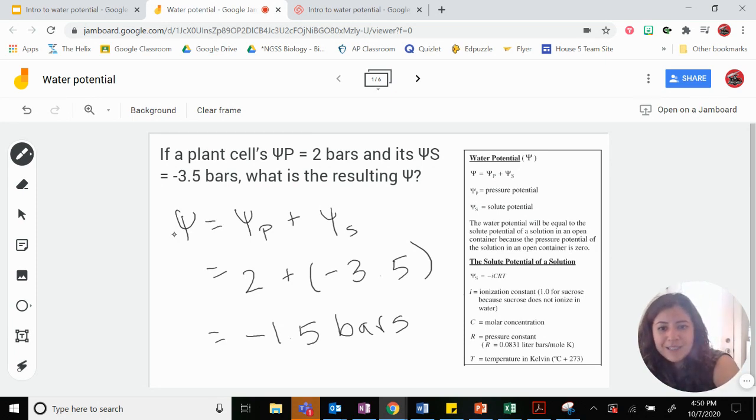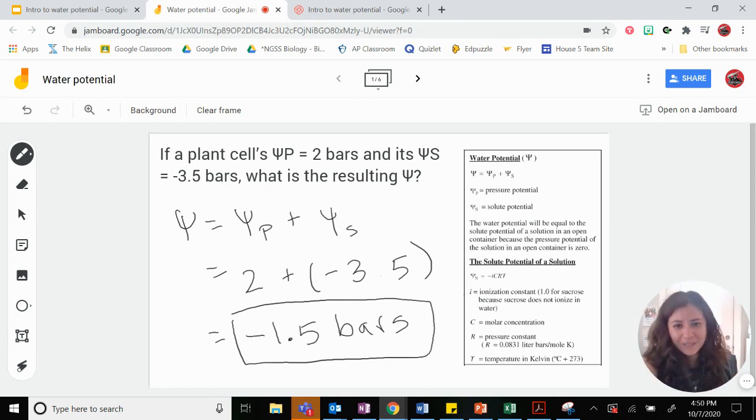So our answer is going to be negative 1.5 bars. If only all math was that easy, right? We can handle that. Let's do a trickier one.